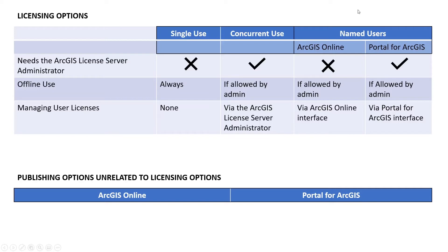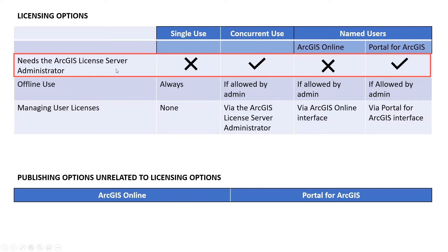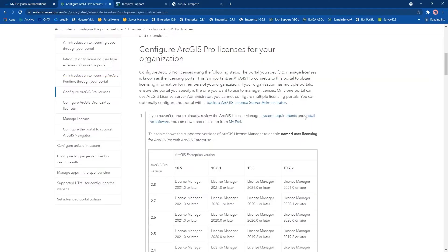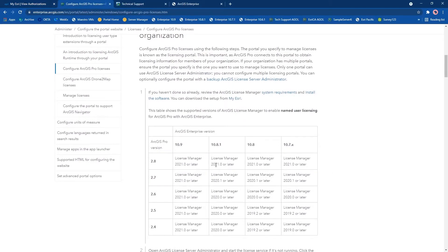Using licenses from named users via Portal for ArcGIS is very similar to having the licenses come from concurrent use licenses, in that they both necessitate a license server administrator. You should make sure that the version of your license server administrator is the correct one for your version of ArcGIS Enterprise and your version of ArcGIS Pro. If you are using an unsupported version you could run into some issues along the way.